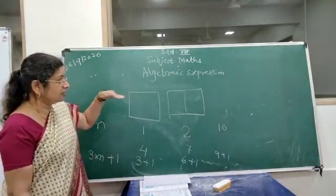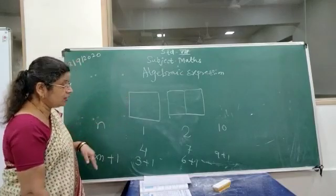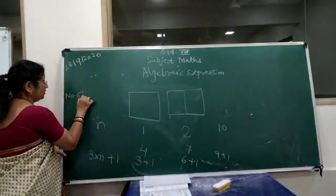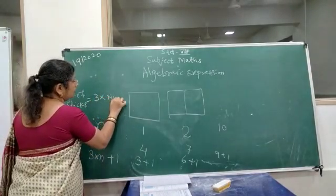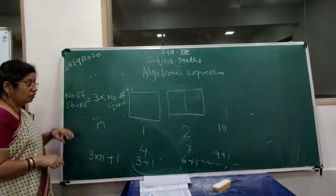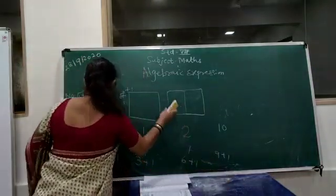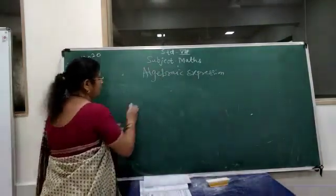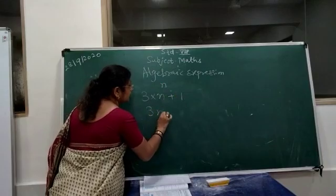See your textbook page number 55 — the arrangement of squares. What we have observed is: number of sticks equals 3 into number of squares plus 1. So if you don't know how many squares there are, and there are n squares, then number of sticks equals 3n plus 1.